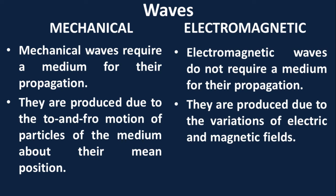Based on whether waves require a medium to travel or not, waves are divided into two types. Mechanical waves require a medium for their propagation, whereas electromagnetic waves do not require a medium for their propagation.